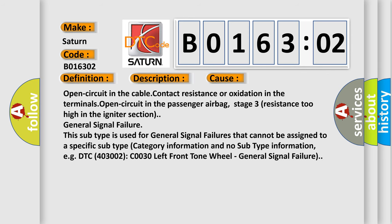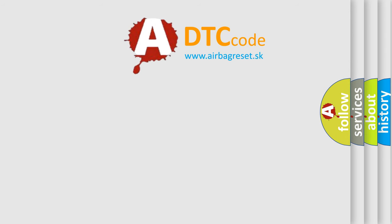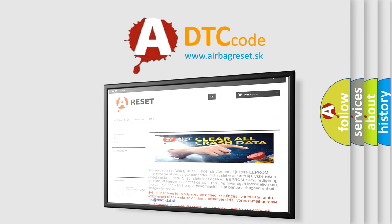This diagnostic error occurs most often in these cases: open circuit in the cable, contact resistance or oxidation in the terminals, open circuit in the passenger airbag Stage 3, resistance too high in the igniter section. General Signal Failure: This subtype is used for general signal failures that cannot be assigned to a specific subtype category information and no subtype information, e.g., DTC 4003002 C0030 Left Front Tone Wheel General Signal Failure. The Airbag Reset website aims to provide information in 52 languages. Thank you for your attention and stay tuned for the next video.